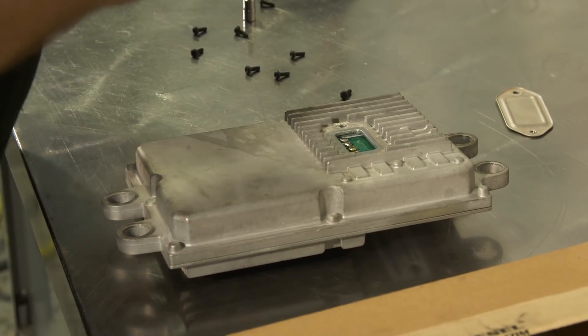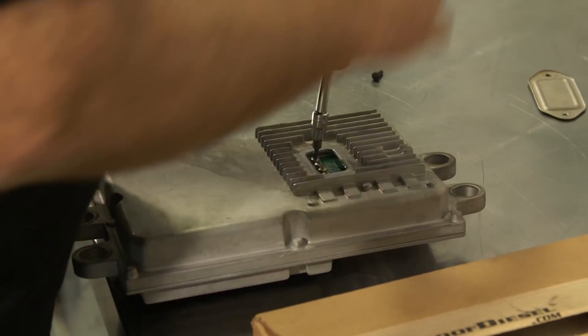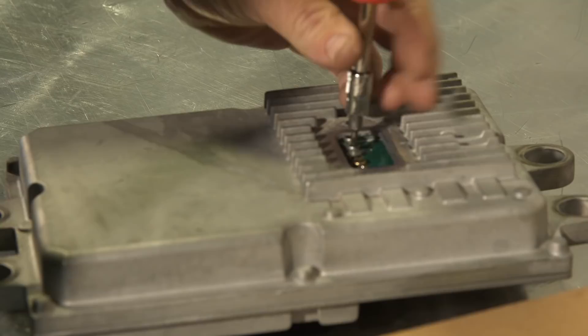And then we're going to remove the four Torx T10s, which are your pins. If you have a 7-pin, there will be seven of these screws.